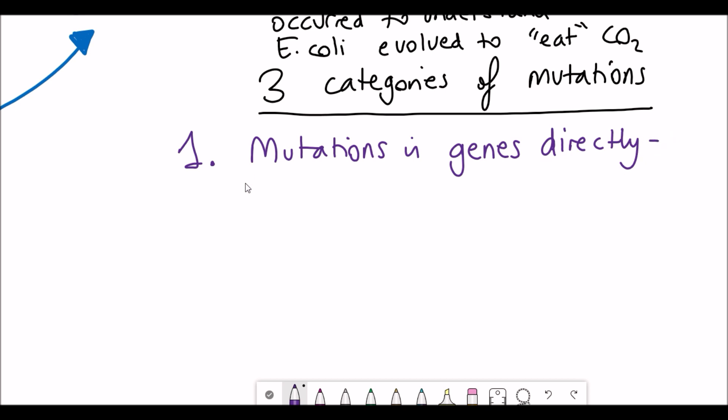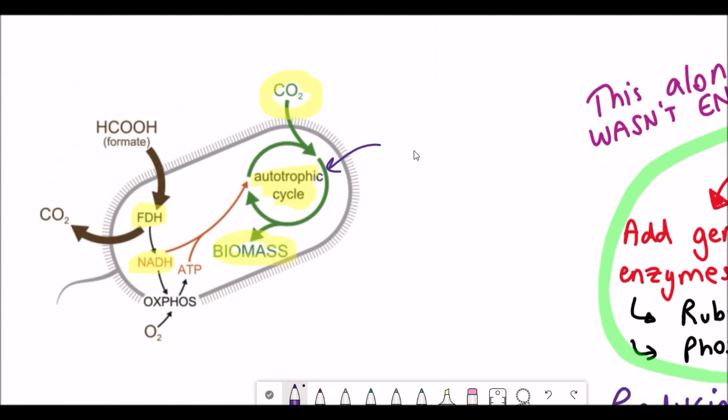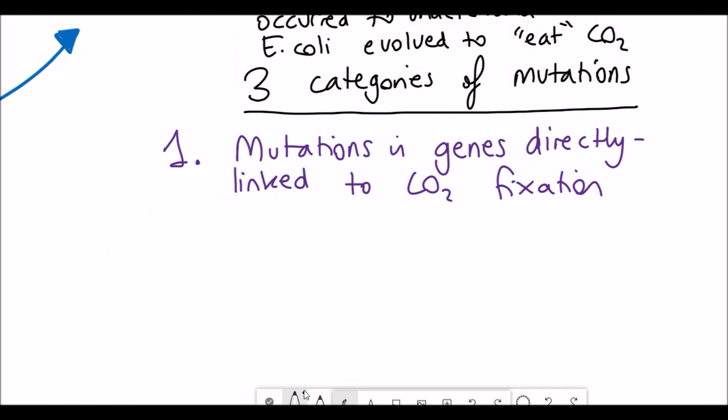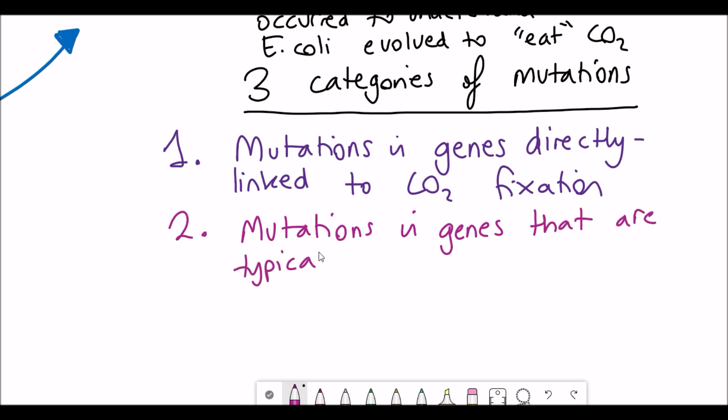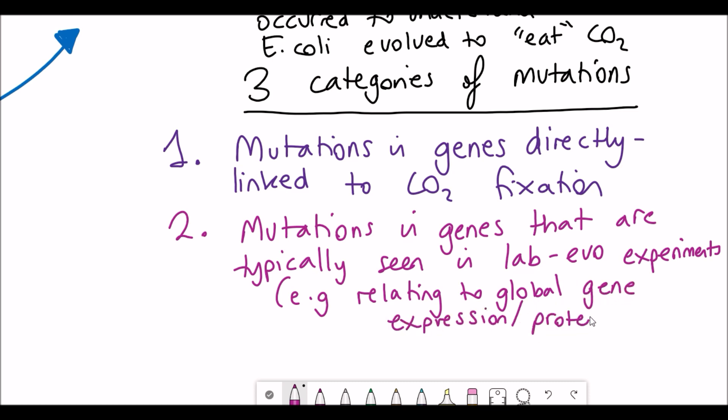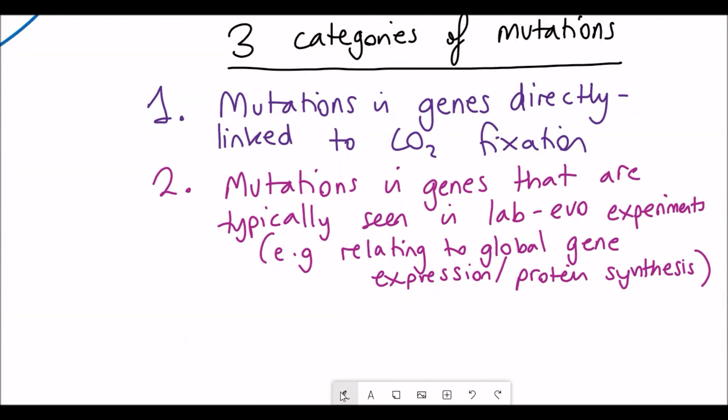So just to further reiterate, going through this evolution process, the bacteria are going to grow and as they grow, they accumulate mutations. There were three categories of mutations that they found in the E. coli population that successfully grew solely on carbon dioxide. The first category were found in genes directly linked to carbon dioxide fixation, which kind of makes sense in this case. The second category of mutations that they found were in genes that are commonly found, or they crop up in experiments that use this adaptive laboratory evolution. These include genes such as genes that regulate gene expression and protein synthesis. So it makes sense that maybe by altering the global rates of the bacterium, it could enable some to grow faster than others.